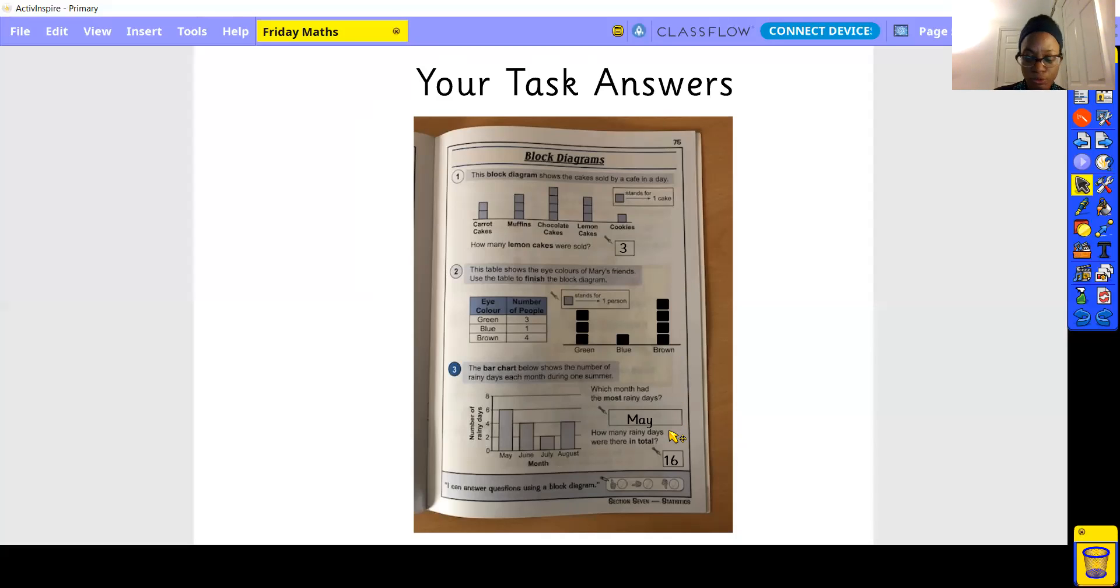Which month had the most rainy days? The month of May. And how many rainy days were there in total? There were 16 rainy days in total. You just had to add up the numbers that you had within each month and looked at this side here to see the number that you needed to help you with that adding up to get your answer. Oh, that's 16.